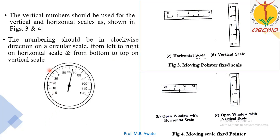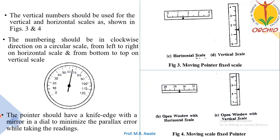For a circular scale, numbering is done clockwise; for a horizontal scale, from left to right; and for a vertical scale, from bottom to top. The pointer should have a knife edge with a mirror in the dial to minimize parallax error while taking readings. These are the criteria to follow while designing displays.